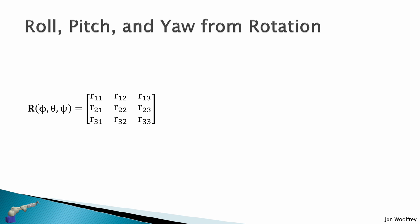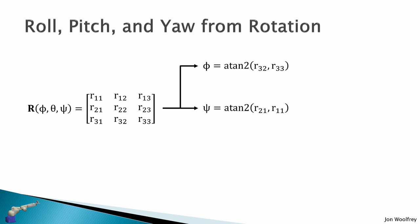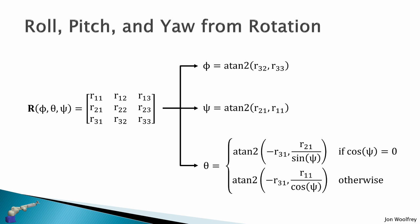Consider a rotation matrix formed from rotations about phi, theta, psi about the X, Y, Z axes, given by this 3×3 matrix. We can extract the phi angle using atan2(R32, R33), extract psi (rotation about Z) using atan2(R21, R11), and extract theta (rotation about Y) using conditional equations involving R31, R21, or R11. So given a rotation matrix, we can always recover the roll, pitch, and yaw angles.